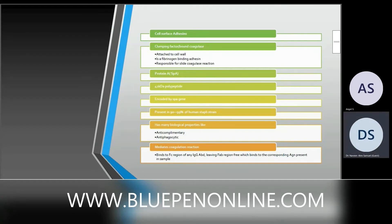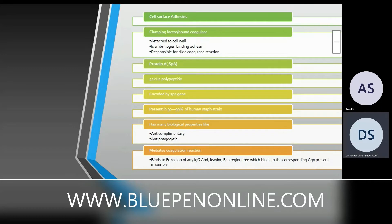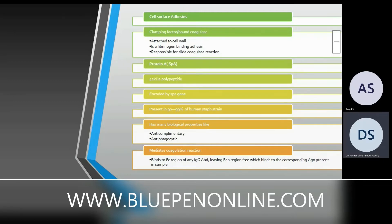Cell surface adhesins include the clumping factor, also known as bound coagulase, which is attached to the cell wall. It is a fibrinogen-binding adhesin responsible for the slide coagulase reaction. There is a distinction between tube coagulase and slide coagulase; the clumping factor (bound coagulase) makes the slide coagulase test positive.